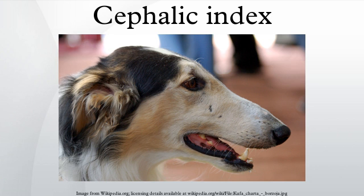Old Croatian Sighthound, Peruvian Hairless Dog, Pharaoh Hound, Poodle, Portuguese Podengo, Rajapalayam, Rampur Greyhound, Rough Collie, Saluki, Serbian Hound, Scottish Collie, Scottish Deerhound, Scottish Terrier, Shetland Sheepdog, Siberian Husky, Silken Windhound, Sloughi, Smooth Fox Terrier, Tazy, Whippet, Wire Fox Terrier.